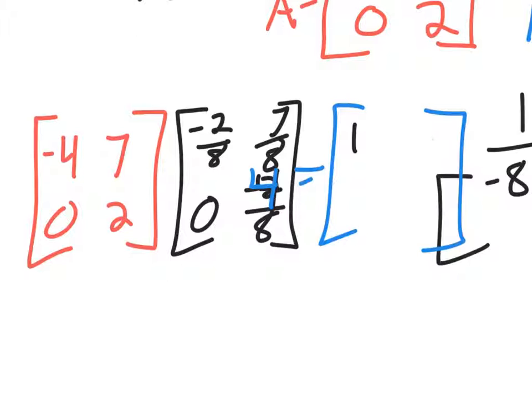And then this is row 1, column 2. So negative 4 times 7 over 8 gives us negative 28 over 8. You need to add to that 7 times 4. That's 28 over 8. So that gives us 0 here.